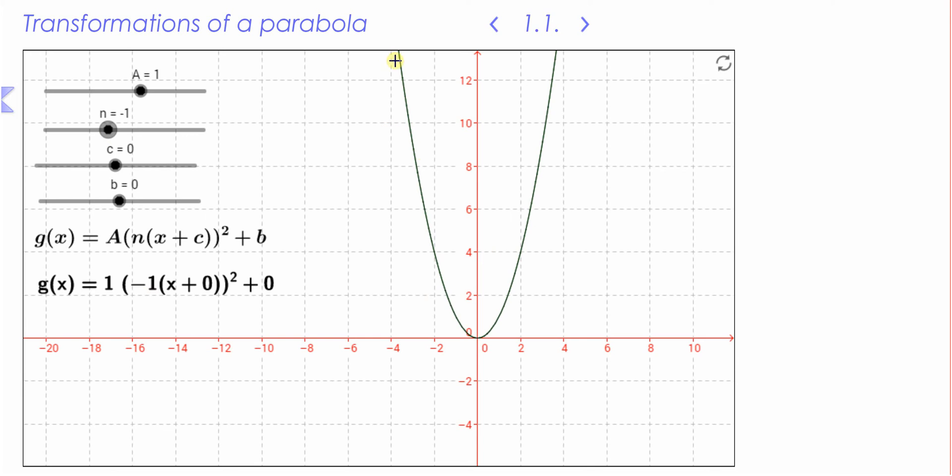And that's because when the value of n is negative, it reflects it in the y-axis. And for this graph, it is symmetrical about the y-axis. So when you reflect it, you can't tell the difference at all. I'm going to put n back to 1.